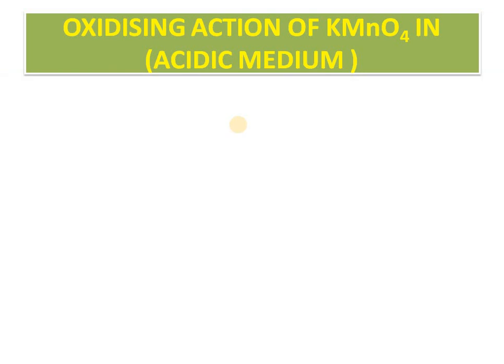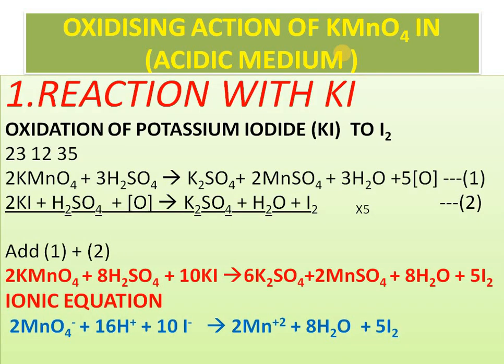The first reaction is the reaction with KI. You need to remember this number: 2, 3, 1, 2, 3, 5. In Punjabi: Tei, Bara, Panthi. Just remember this number 23-12-35 and the order must be correct — you cannot change the order and expect the equation to balance. So: 2KMnO4 + 3H2SO4 → K2SO4 + MnSO4 + H2O + O.